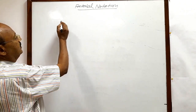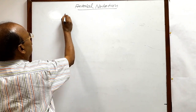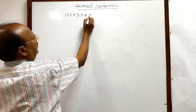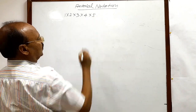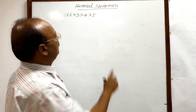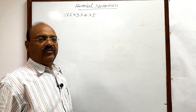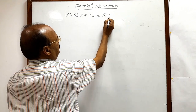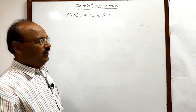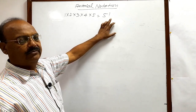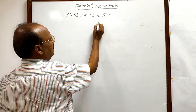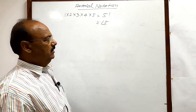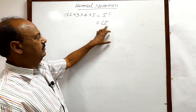Suppose we are multiplying the first 5 natural numbers: 1 × 2 × 3 × 4 × 5. With the help of factorial notation we can write it in a very simple way. This is written as 5! and we read it as '5 factorial', or it can also be written as 'factorial 5'.